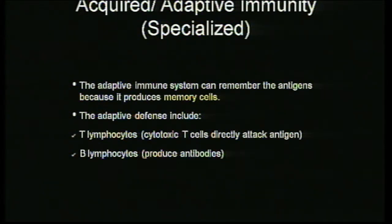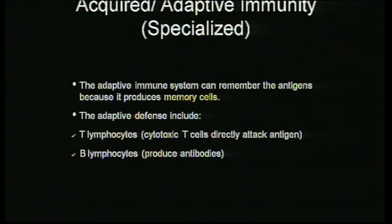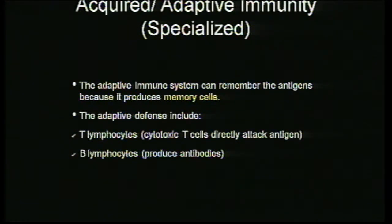In acquired immunity, two types of cells come into play: T lymphocytes — where T represents the thymus — and B lymphocytes, which are all white blood cells. T cells are of two types: cytotoxic T cells, which directly attack the pathogen, and helper T cells, which help other immune cells — for example, helping B cells attack the pathogen. B lymphocytes produce antibodies. This is very important — B lymphocytes produce antibodies.